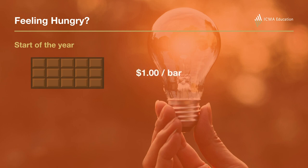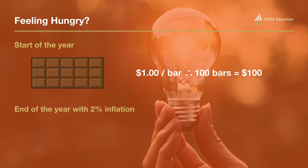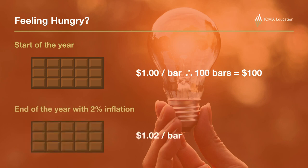Let us say that a bar of chocolate costs $1, and so buying 100 bars will, of course, cost $100. Suppose that inflation over the next 12 months is 2% per annum. Then each individual bar would cost $1.02, and so the cost to buy 100 bars would be $102.